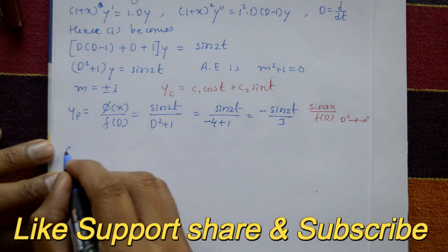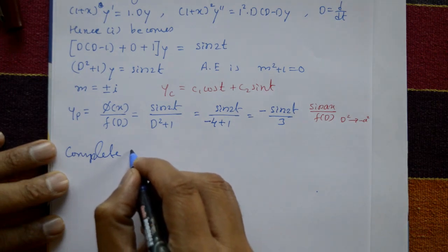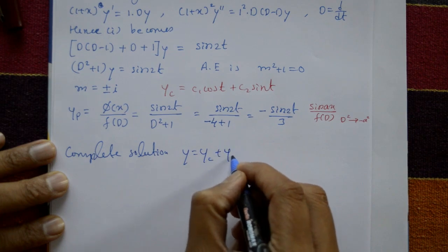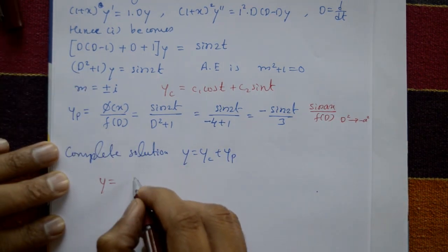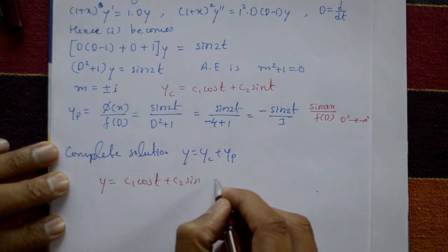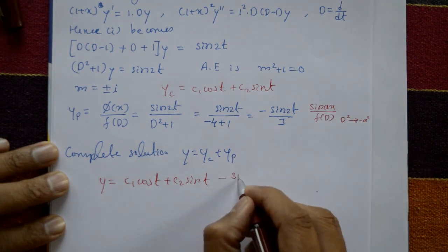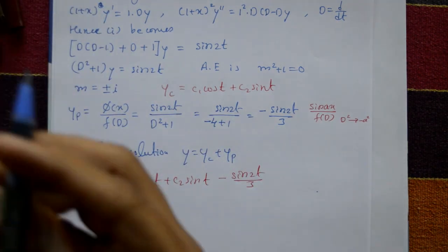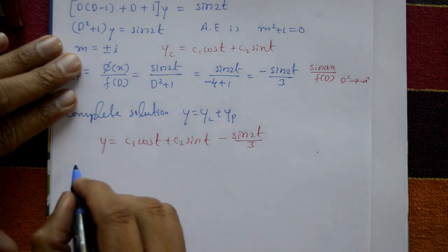Now the complete solution is y = yc + yp. So y = c₁ cos t + c₂ sin t − sin 2t / 3. This problem is asked many times in theory exams. Now substitute back t = log(1 + x) to express y in terms of x.